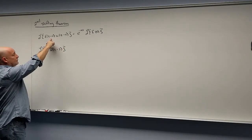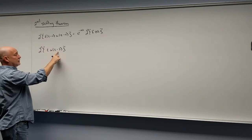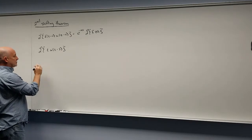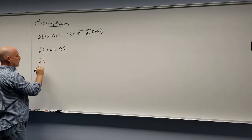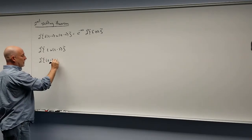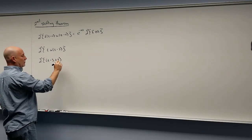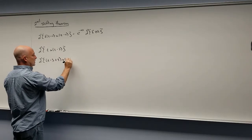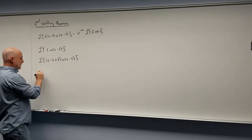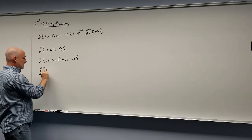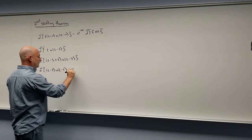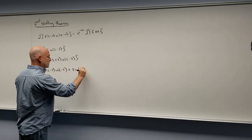Here our function is just t, but to use the second shifting theorem, we need the same shift — we need the t minus 3 piece. So we're going to cheat: everywhere there's a t, we write t minus 3 plus 3, because that's really just zero, so nothing changes. We keep the t minus 3 piece, giving us (t-3)·u(t-3) + 3·u(t-3).